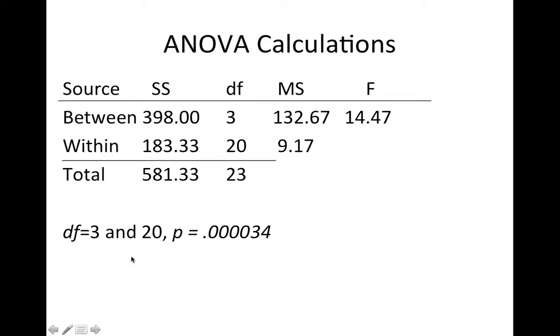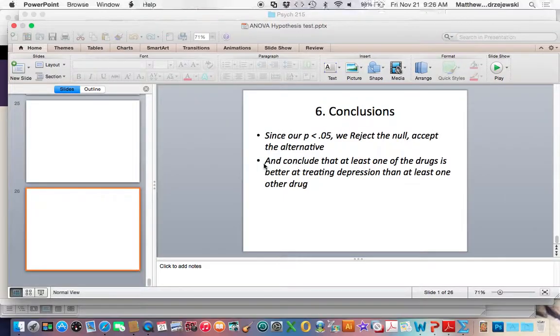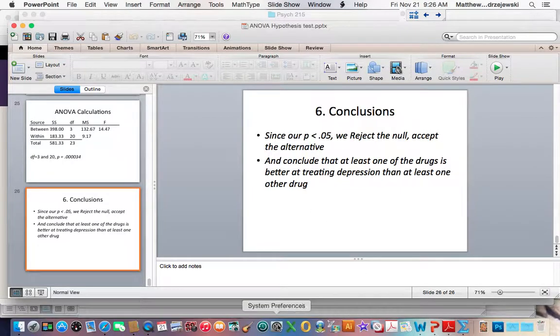Then I look at a p-value associated with an F with three and twenty degrees of freedom, and that's equal to .00034. So, since our p-value is less than .05, we reject the null and accept the alternative. The alternative just says that the null is wrong, so we're rejecting it. We conclude that at least one of the drugs is better at treating depression than at least one other drug. I know that's an unfortunate sort of conclusion, but we have a difference there between the effectiveness of the drugs. We're going to be able to go in and test which ones exactly are best, but we're going to save that for another time now.